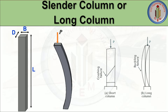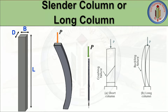Let's discuss what will be the behavior of a long column when the load is applied. Generally, slender means long and thin. So when the load is applied on a slender column, it tends to buckle due to its slenderness. For example, consider this refill pen — it is thin and long. When the load is applied on this pen, it tends to buckle. The same thing happens to a column: when the load is applied on a long column, it tends to buckle.